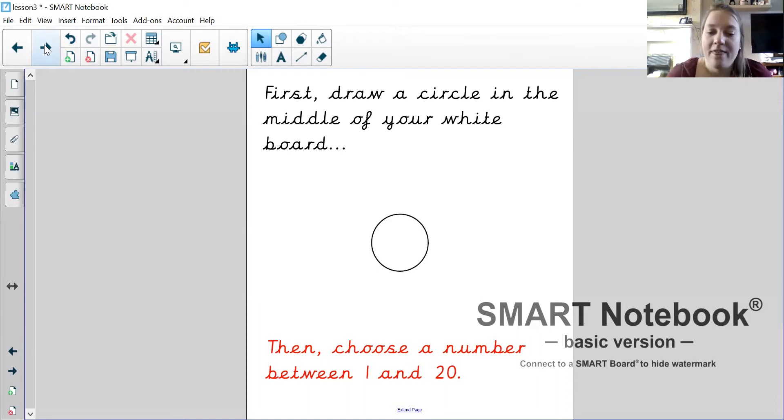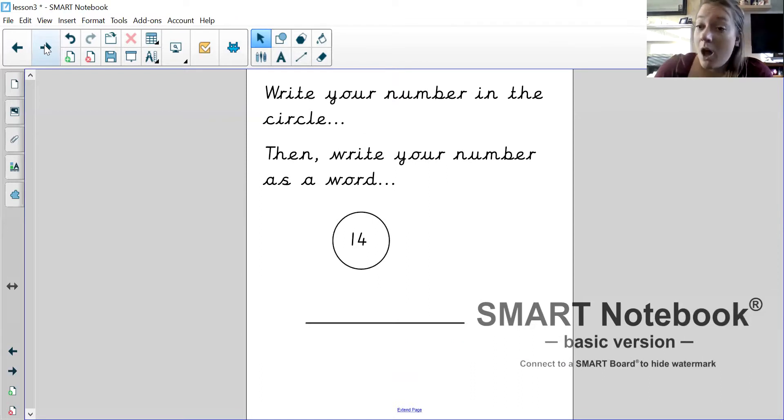Okay, once you've done that, I'd like you to have a think and I'd like you to choose a number between one and twenty. You choose a number. I've chosen a number, I'm going to do the number 14 and I've written my number 14 in the circle. Can you write your number in your circle? So whatever number you chose to do, write it in the circle for me.